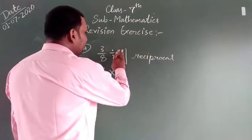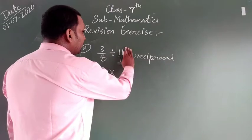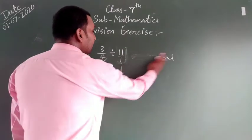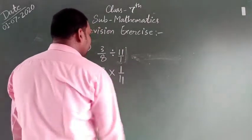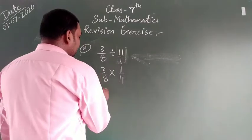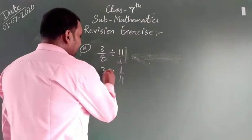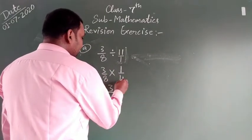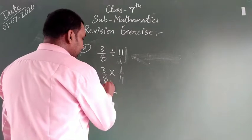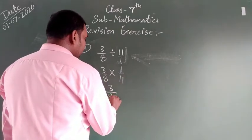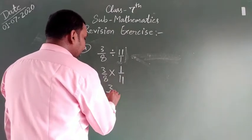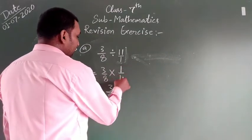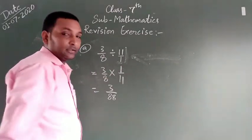11 upon 1 — what do we do? We take its reciprocal: 1 upon 11. Then we multiply it: 3 upon 3, times 11 upon 1. If you have any information about this, then we will proceed.